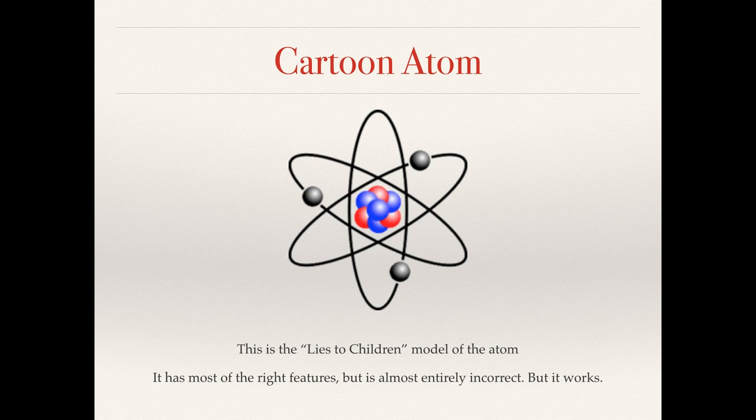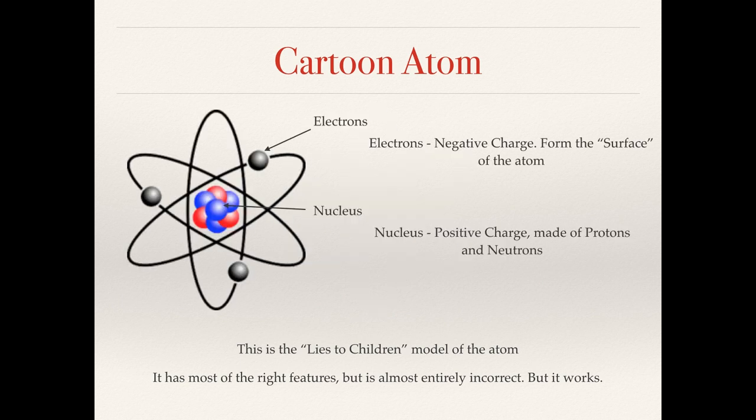So this is the cartoon atom. This is the lies to children model of the atom. It's got most of the right features, but it's almost entirely incorrect. But it kind of works. It's good enough to get the general idea across. What you have is a nucleus surrounded by electrons. For conservation, we're mostly interested in the chemistry of the atoms. This is basically what's going on with the electrons. Electrons do chemistry. But for completeness, we'll also have a quick peek at the nucleus of the atom.